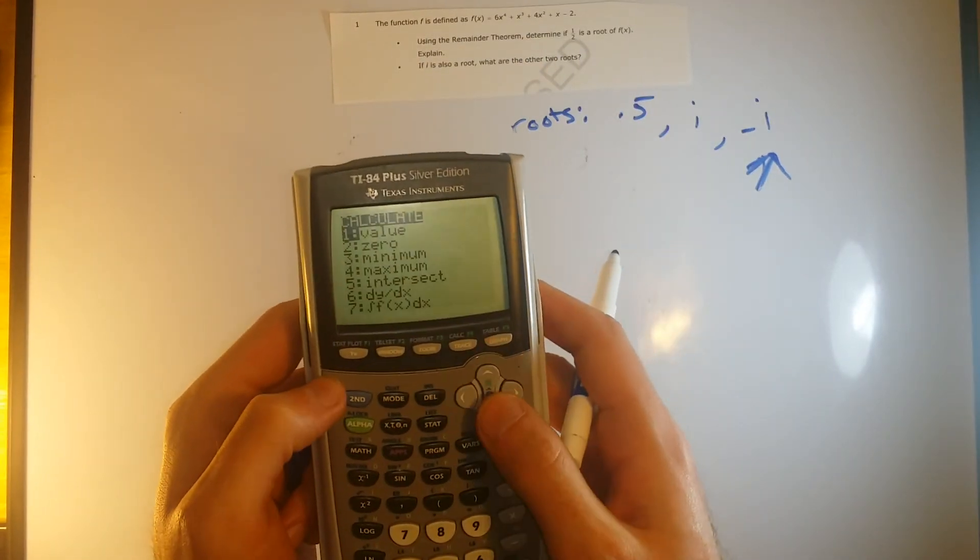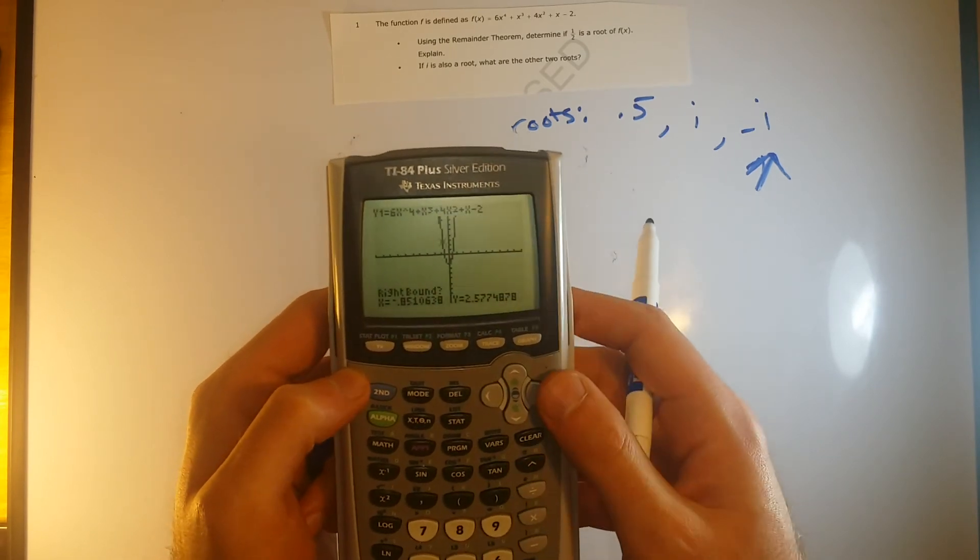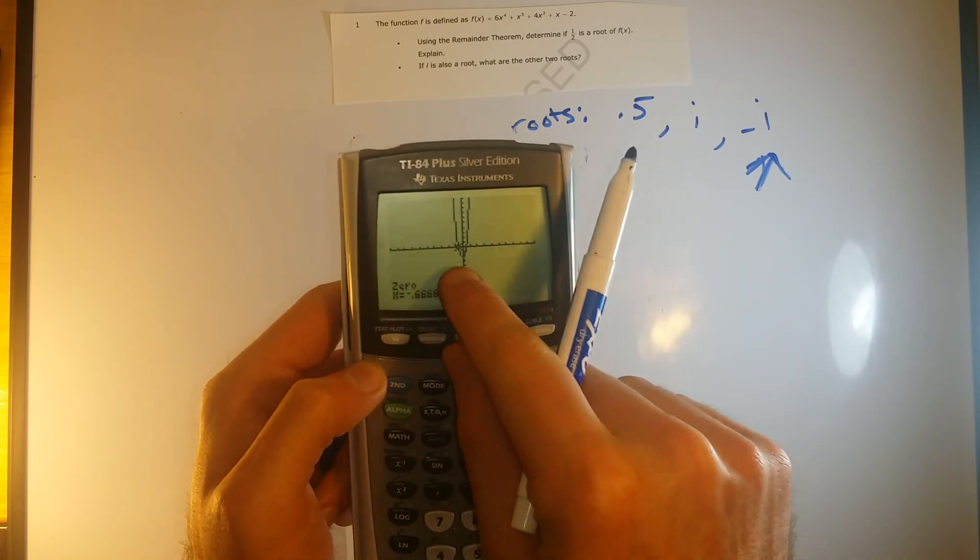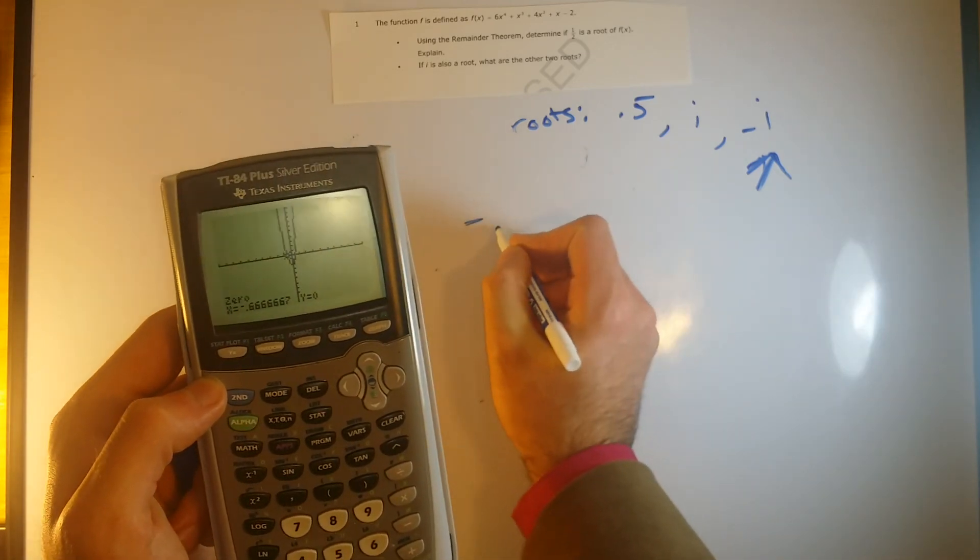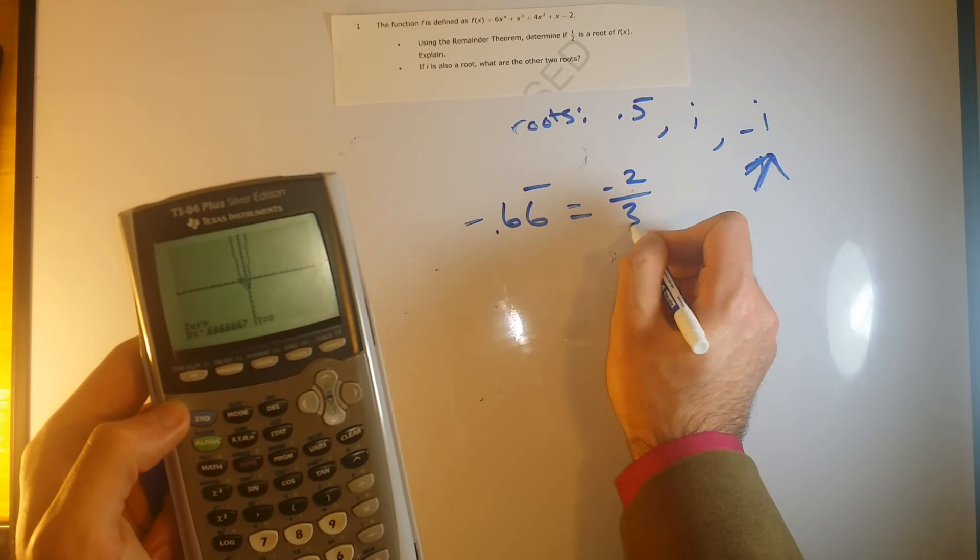So, we can just do second calc zero, left bound, right bound, enter, and it takes it to that point, negative 0.66666, so negative 0.66 forever, or that's also the same as negative two thirds.